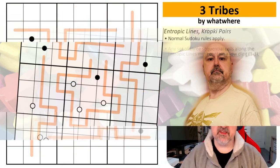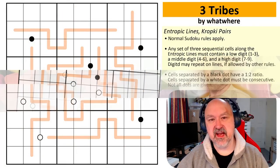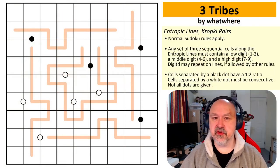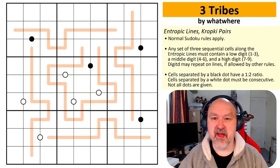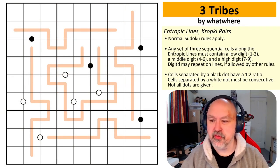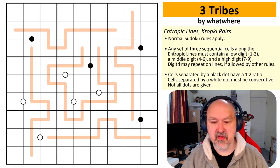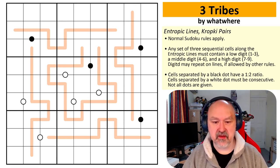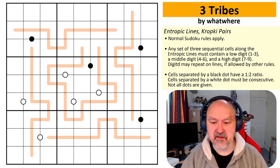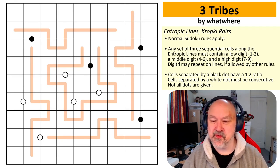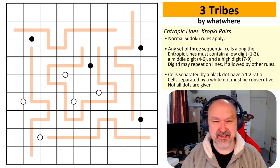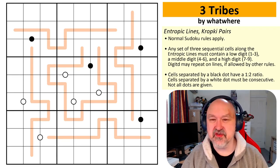Good morning everyone, this is Bremster and today I'm coming to you with a puzzle called Three Tribes by Watware, who also goes by the setter named Stuart. This is an entropic lines puzzle. I've done quite a few entropic lines puzzles on my channel before and I really enjoy this constraint.